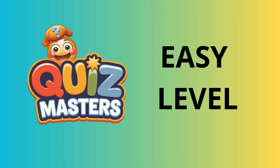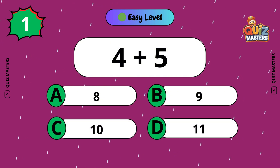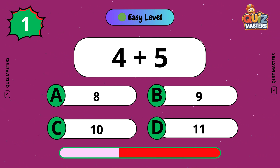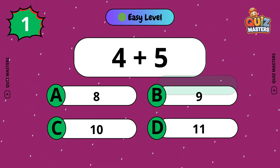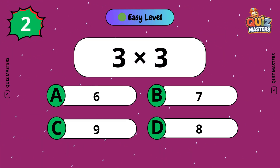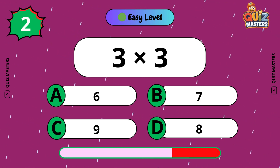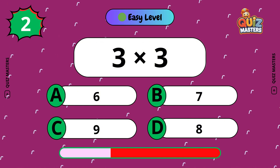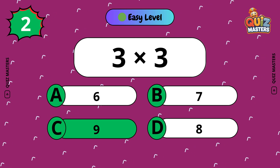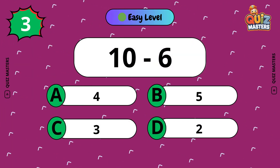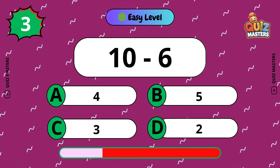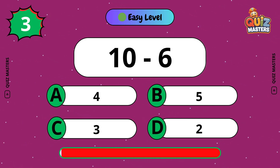Easy level. 4 plus 5: 9. 3 by 3: 9. 10 to 6: 4.